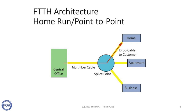The first FTTH architecture is home run or point-to-point. Basically, every subscriber has a dedicated fiber that goes from central office electronics — typically an Ethernet switch — to the home. The problem is every subscriber has to have a fiber, and in some networks that means a lot of fibers. If you've got 100,000 subscribers, you're going to have 100,000 fibers, and that can be a problem, particularly in dense urban areas.